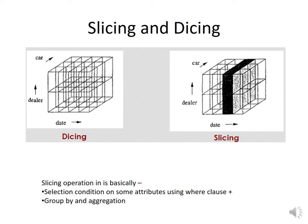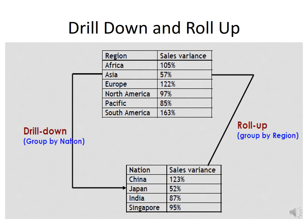Slice is the act of picking a rectangular subset of a cube by choosing a single value for one of its dimensions, creating a new cube with one fewer dimension. Dice is the operation that produces a subcube by allowing the analyst to pick specific values of multiple dimensions. Drill down or up allows the user to navigate among levels of data, ranging from the most summarized (up) to the most detailed (down). Roll up involves summarizing the data along a dimension, where summarization rules might be computing totals along a hierarchy or applying a set of formulas.